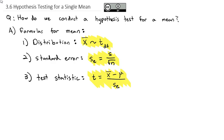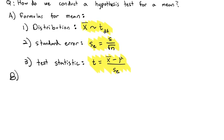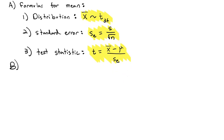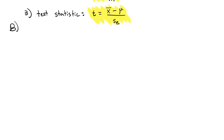Because the t-distribution has a slightly different shape based on the degrees of freedom, we need a better way than just looking up a value on a table to calculate the p-value. The way we're going to do that is to use our calculator.